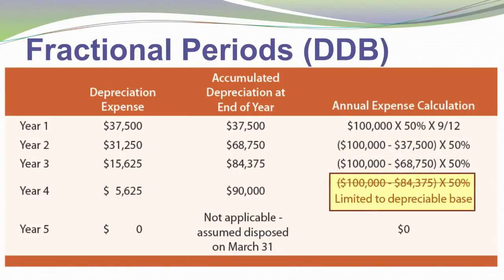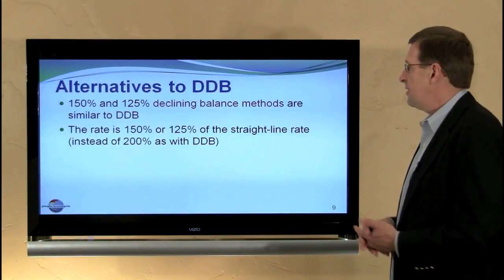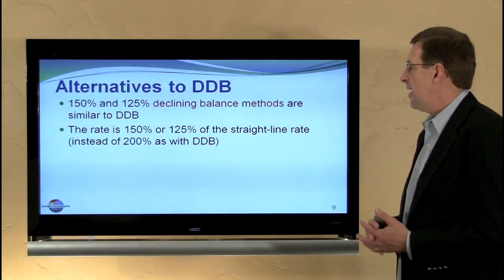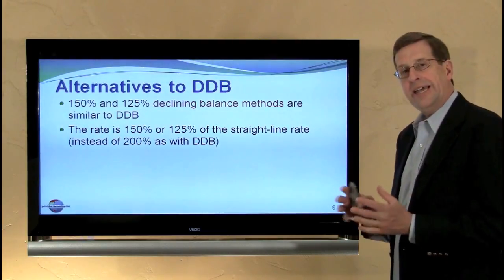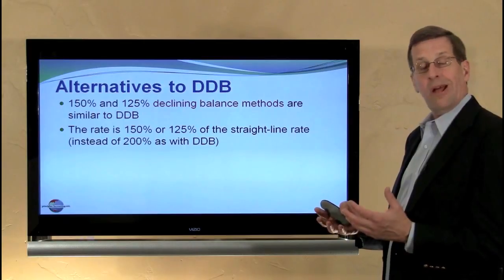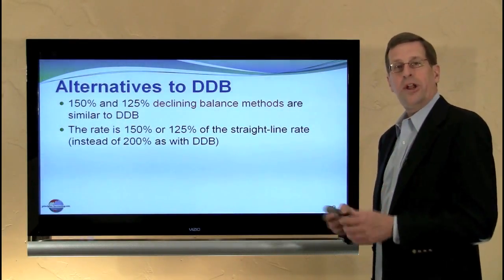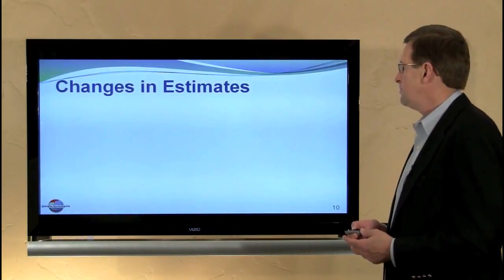As we near the end of the useful life, we'll simply stop depreciating when accumulated depreciation reaches the $90,000 depreciable base. There are alternatives to DDB: the 150% declining balance method and the 125% declining balance method — identical methodologies to what we've just looked at, except that rather than using twice the straight-line rate, we use one and a half or one and a quarter times the straight-line rate.